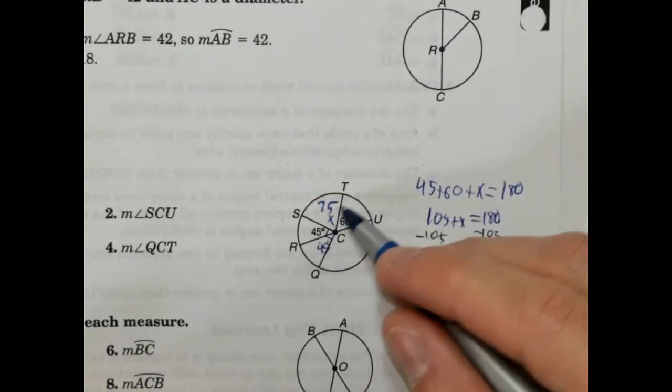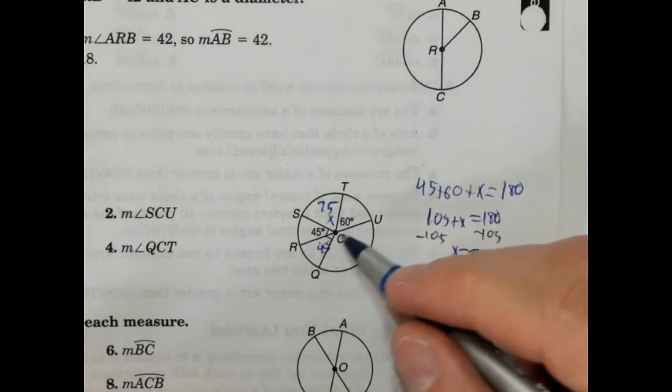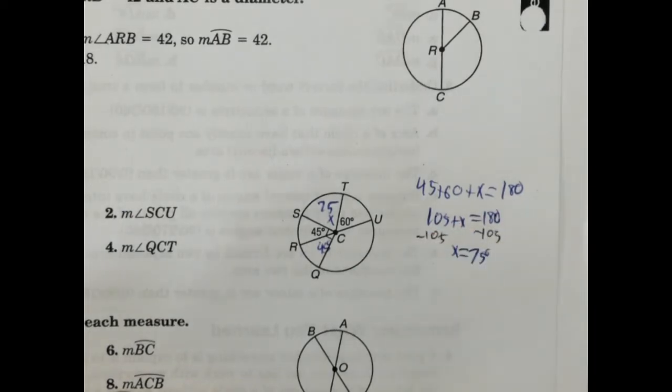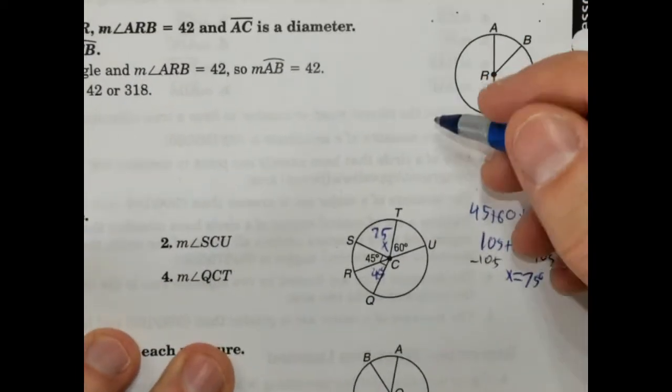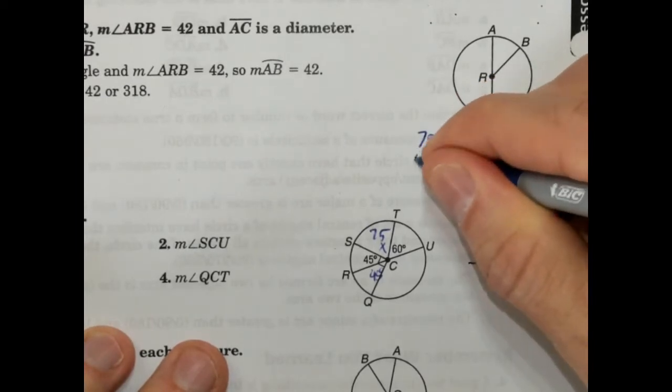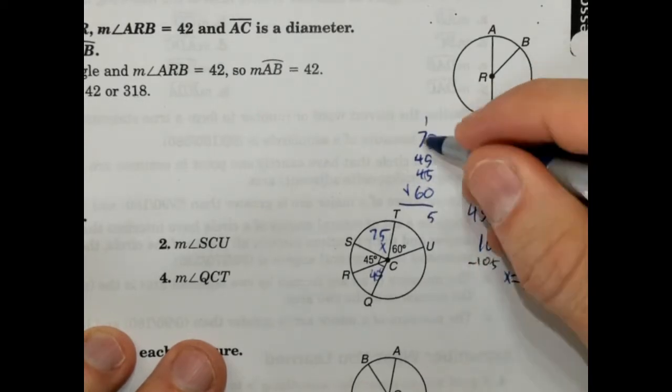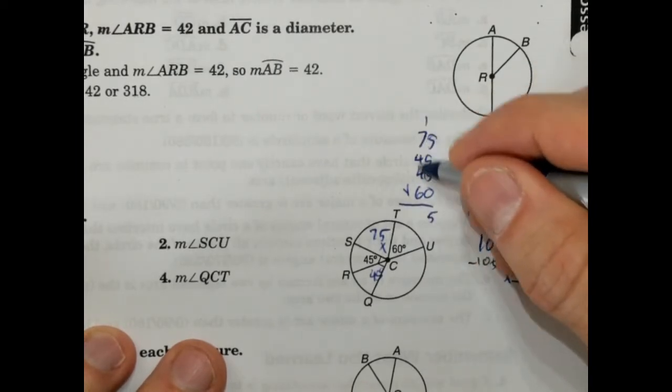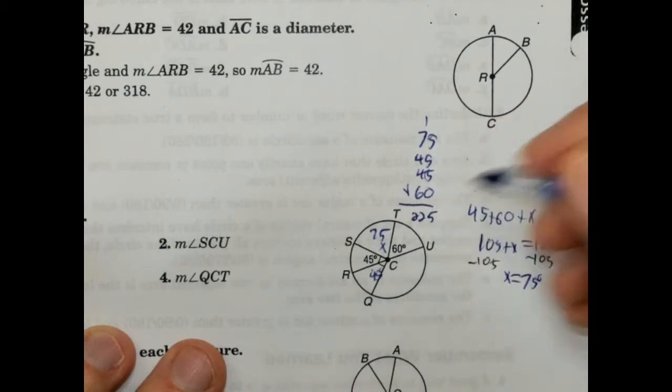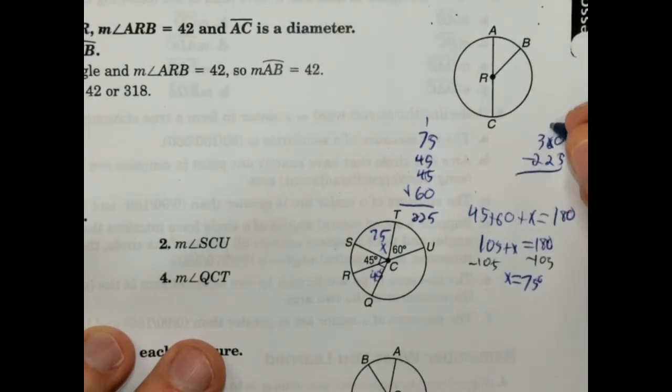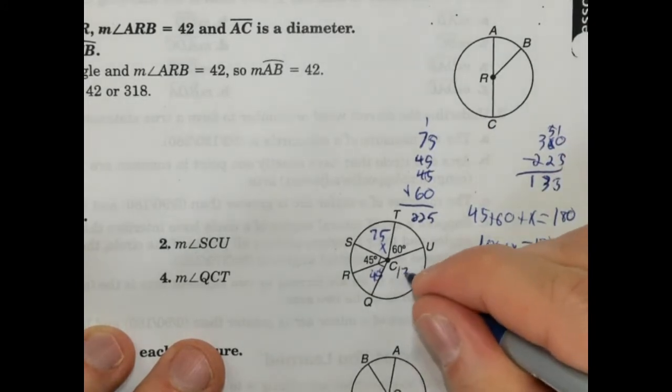So this is 75. And now this one's interesting. We'd have to add these all together and subtract them from 360 because the whole circle is 360. So we're going to do that. So 75 plus 45 plus 45 plus 60, we're going to get 225. We're going to subtract that from 360 to find out what that is. So 360 minus 225 is 135. This is 135 degrees.